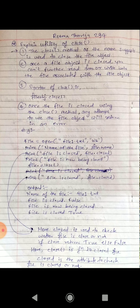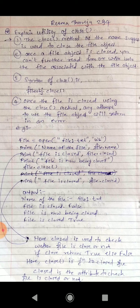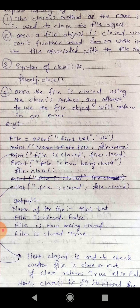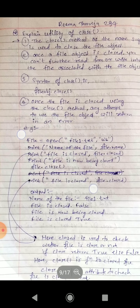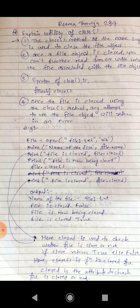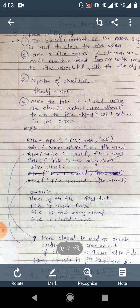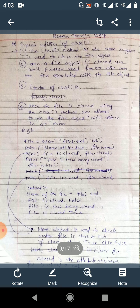Here we open file file one dot txt in write mode in binary format. Name of the file is file dot name. Print file is closed, so file dot closed is the attribute that we are using to check whether the file is closed or not. The output shows: name of the file file one dot txt, file is closed false. Why? Because initially the file is not closed, that's why your answer is file is closed false.